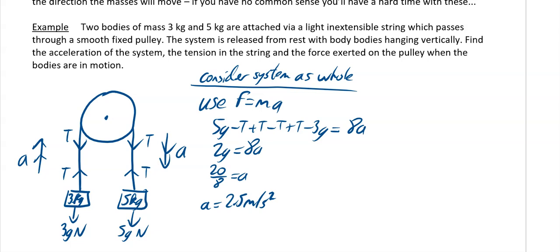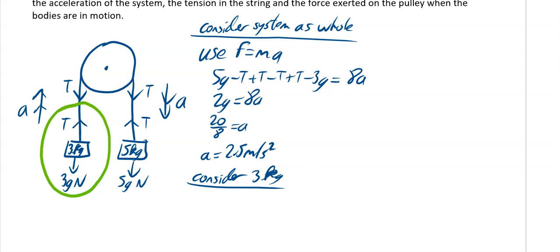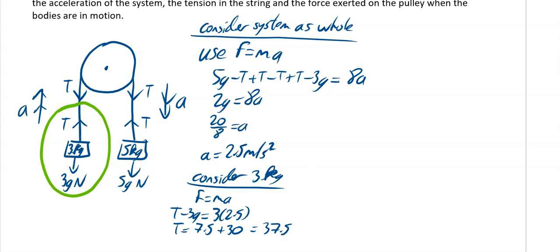Next we find the tension in the string. Consider the three kilogram mass alone. Resolving upwards using F equals MA: T minus 3G equals 3 times 2.5. So T equals 3 times 2.5 plus 3G, which is 7.5 plus 30. Therefore T equals 37.5 Newtons.